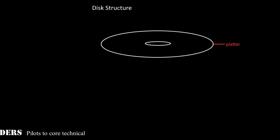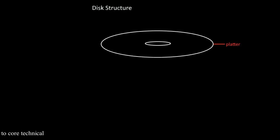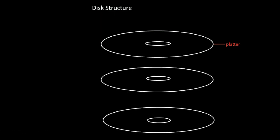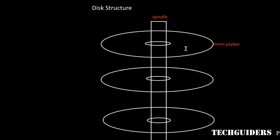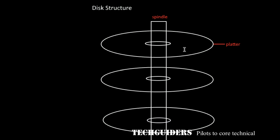The magnetic disk consists of platters stacked upon one another and mounted on a spindle. Each platter has two surfaces — a top surface and a bottom surface — and each surface has a magnetic material on it and can keep data or information on it.